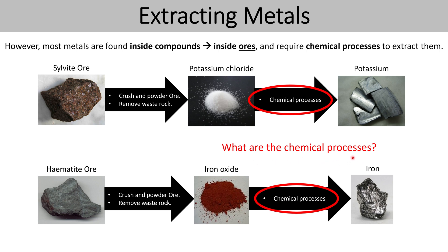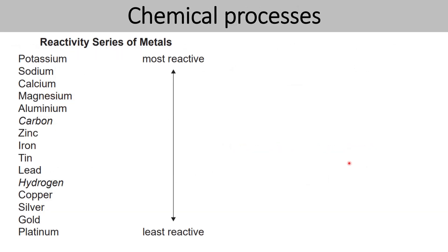So what we need to do now is look at what these chemical processes involve and be able to describe them and complete equations for them. In order to understand these chemical processes, we need to link it to the reactivity series of metals. You may see that I've added two new elements to this reactivity series in italics: the first is carbon and the second is hydrogen. It's important to note that these are not metals; however, they're put here for reference because they're used in some of the extraction processes.